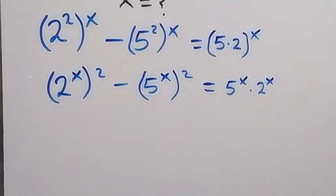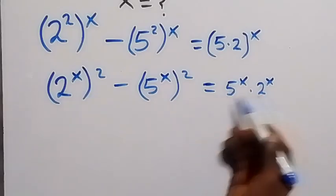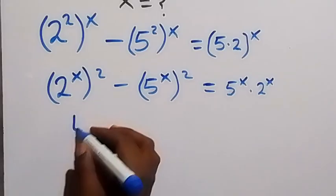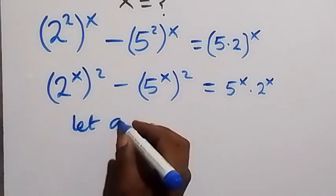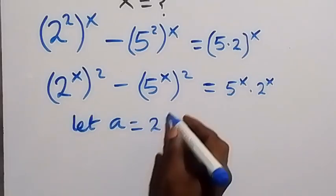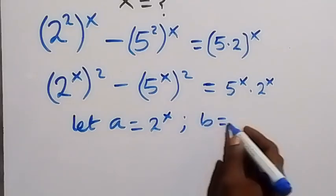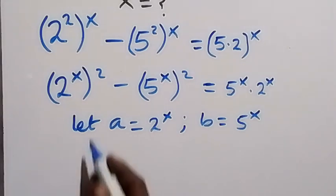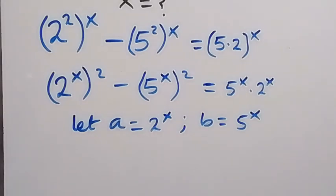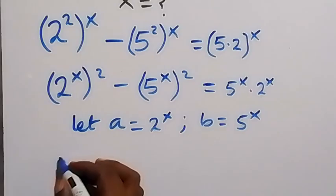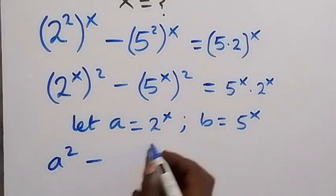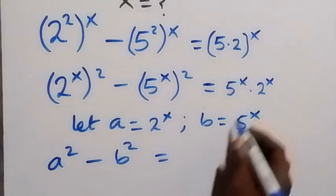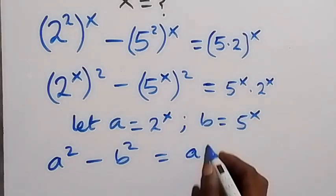In the next step, we have 2 raised to power x and also 5 raised to power x, so let a letter represent them: let a equal 2 raised to power x and let b equal 5 raised to power x. From here we can write this equation in terms of a and b, and this becomes a squared minus b squared equals a times b.